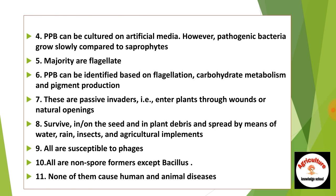Number five — majority are flagellate. Number six — plant pathogenic bacteria can be identified based on flagellation, carbohydrate metabolism, and pigment production. Number seven — bacteria are passive invaders, that is, they enter plants through wounds or natural openings. Number eight — survive in or on the seed and in plant debris, and spread by means of water, rain, insects, and agricultural implements.